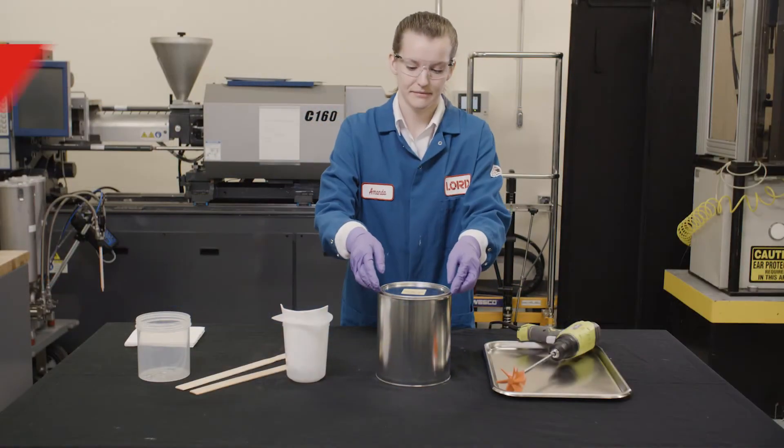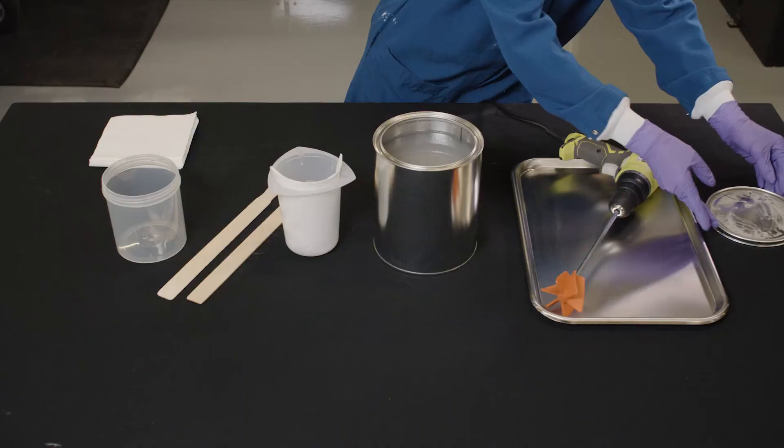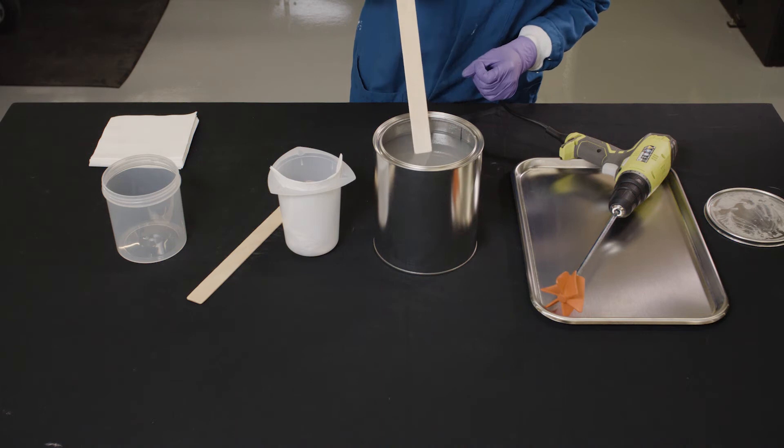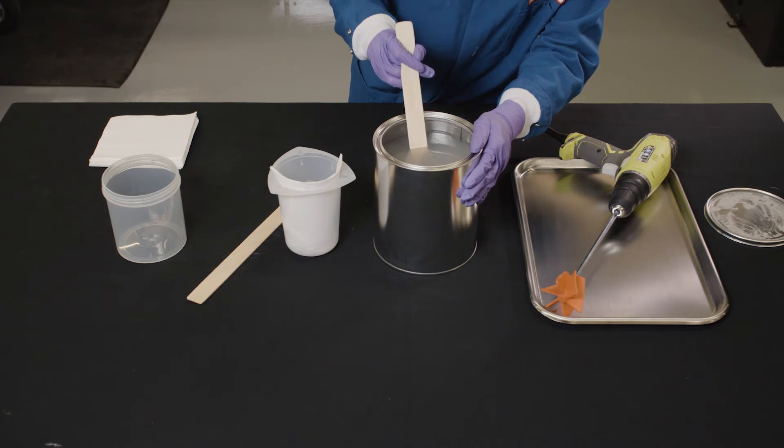Thermally conductive potting products contain fillers that may settle to the bottom of the package. Upon opening a new container, it's important to check for settled material. Most of the time, settling is apparent due to a clear liquid layer at the top of the pail.